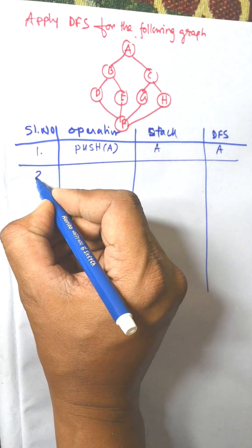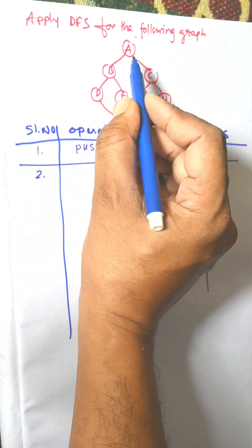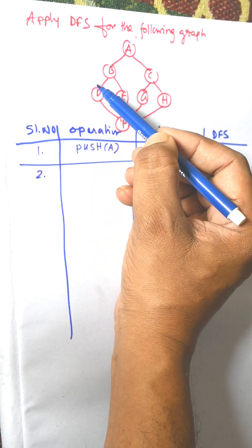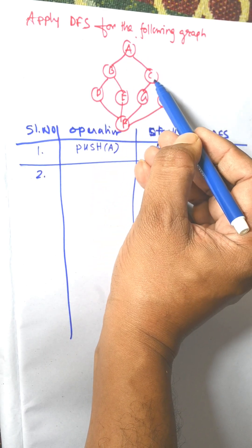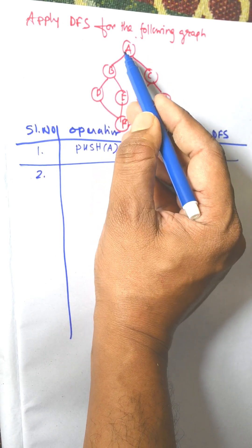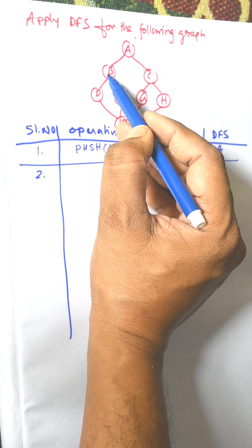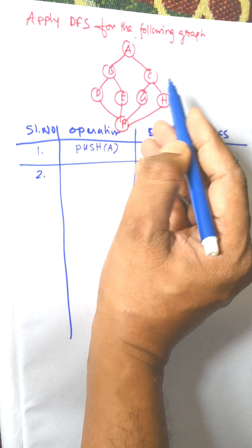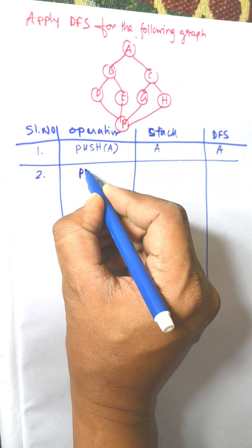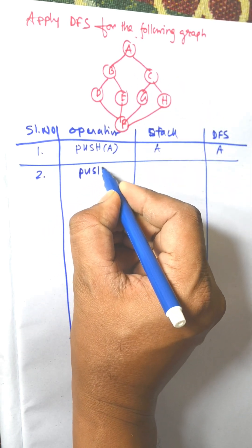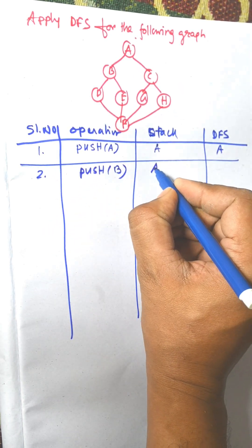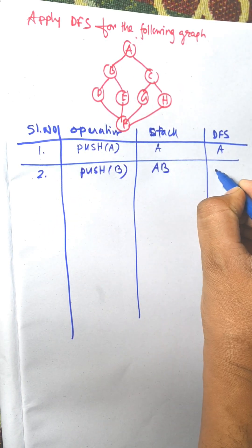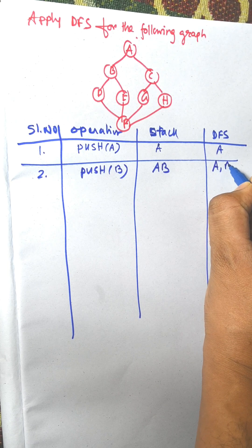Now serial number 2. Next, B is connected to A and C is connected to A. We will visit according to alphabetical order, so push B. The stack is now A, B and the visited list is A, B.